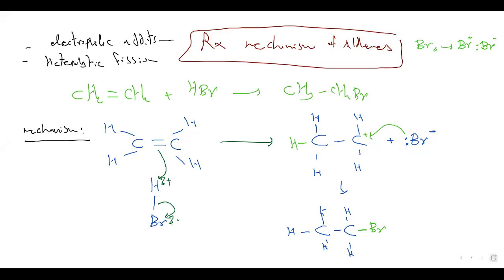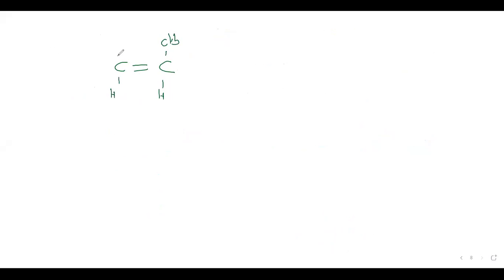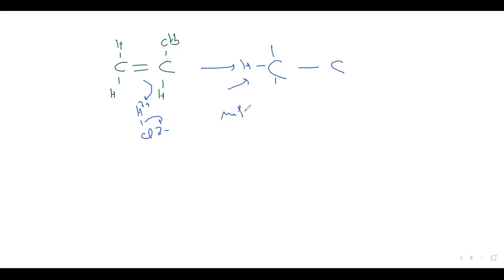In the case of adding an asymmetric reagent to an asymmetric alkene — like CH₃CH=CH₂ with HCl — there is a partial positive on H and partial negative on Cl. The H must be added to the side that contains more hydrogens (the major product — Markovnikov's rule). The other carbon takes the halogen, so Cl⁻ with its lone pair attacks to form the product: CH₃CHClCH₃.